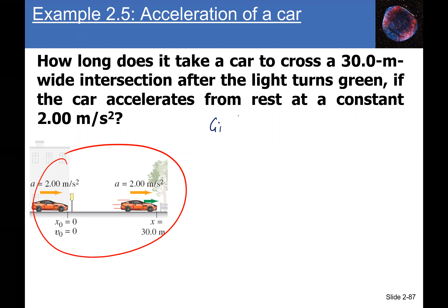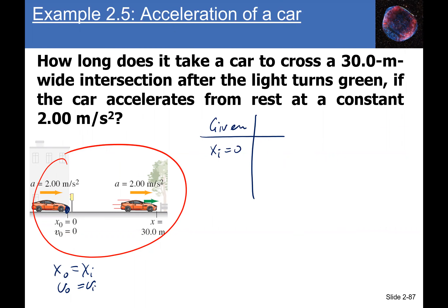We are given the following. The intersection is 30 meters wide, so if the object is at the initial position at the initial time we take x initial to be zero and x final to be 30 meters. Note that x naught and v naught are just another notation for x initial and v initial — you might see both used.